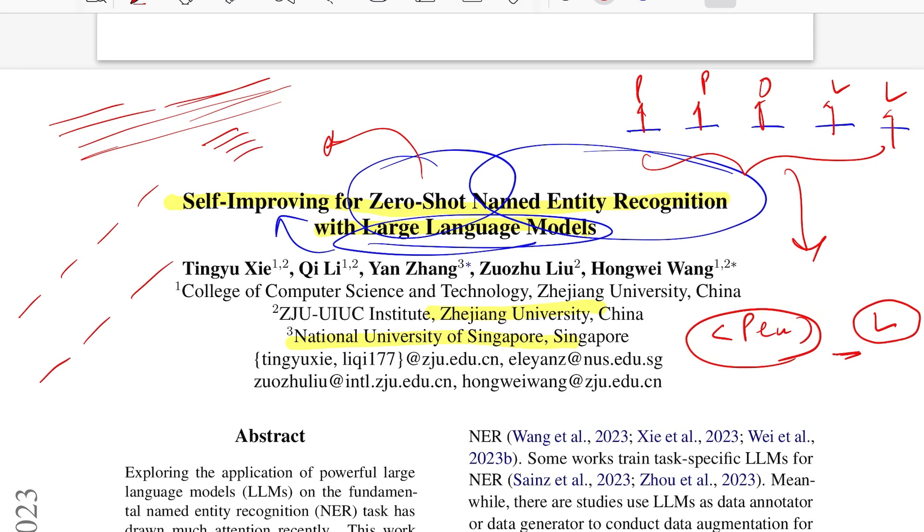And in case you try to provide a few examples for the model to kind of stare through and understand what it should be expecting, that is often termed as few-shot and in this case it would be few-shot NER. Let's now delve into the paper and see what this self-improving framework looks like.